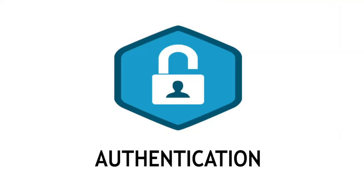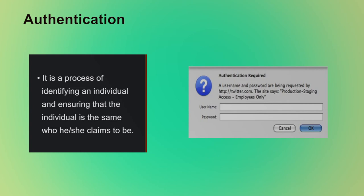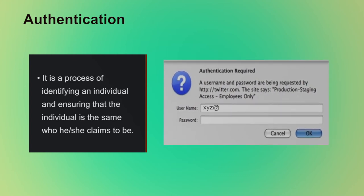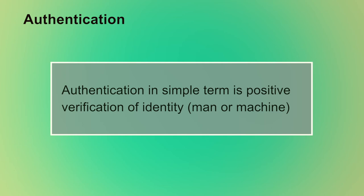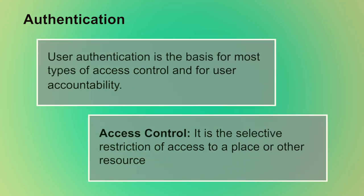The first cyber security technique we are going to discuss is authentication. Authentication is a process of identifying an individual and ensuring that the individual is the same who he or she claims to be. It is the process of ascertaining claimed user identity by verifying user-provided evidence. For example, as you can see in the image, a username is required to identify who you are and the password is required to ensure that you are the authentic user. Once you enter valid credentials, you will be authenticated. Authentication in simple terms is positive verification of identity, either man or machine. In most computer security concepts, user authentication is the fundamental building block and the primary line of defense. User authentication is the basis for most types of access control and for user accountability.